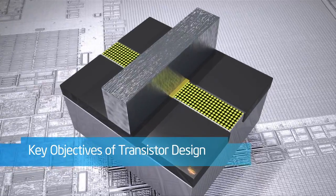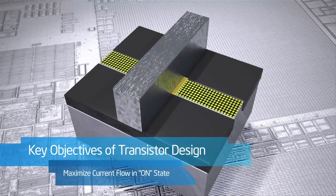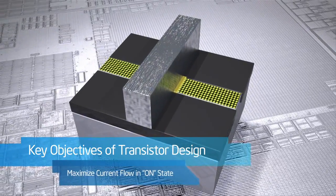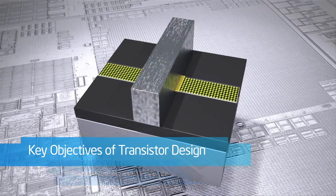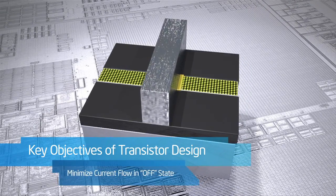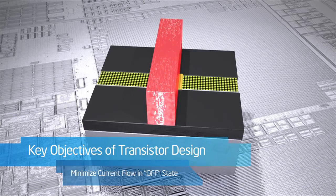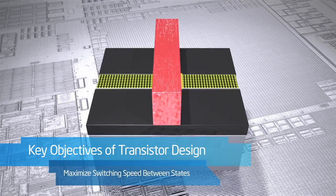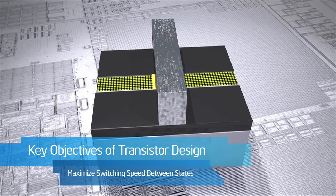Some key objectives in transistor design are to have as much current flowing as possible when in the on state, for performance. To have as close to zero current flowing when it is in the off state, to minimize power usage. And to switch very quickly between the two states, again, for performance.